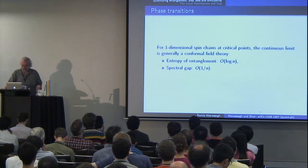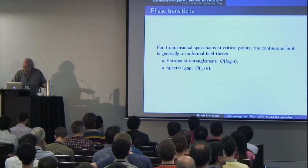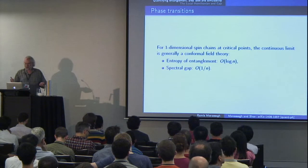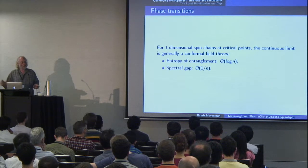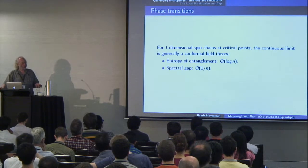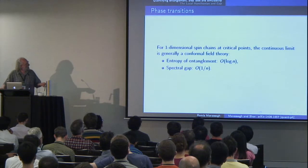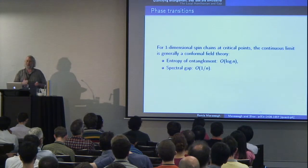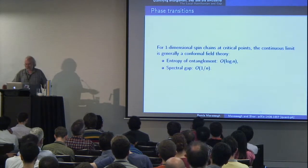For one-dimensional spin chains at critical points, the continuous limit generally belongs to a conformal field theory. What we know about conformal field theories is that the spectral gap is 1 over N, and the entropy of entanglement is O(log N), where N is the number of spins in the chain.